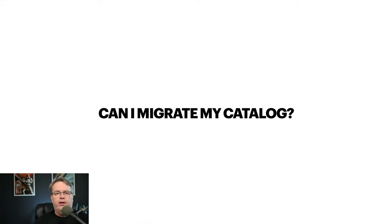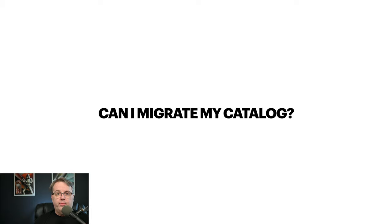The first question is: can I migrate my catalog? The initial answer to this question was no — the catalogs between Luminar AI and Luminar Neo were incompatible with each other. Skylum heard the feedback about this; it's something that is of concern to a lot of their customers. So they're going to come out with a catalog migrator. You're not going to be able to use the same catalog if you use both Luminar AI and Luminar Neo simultaneously, but if you want to migrate your Luminar AI catalog over to Luminar Neo, that is something they're building. It won't be available at launch time.